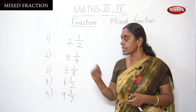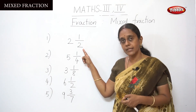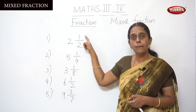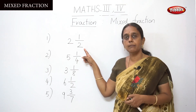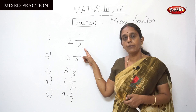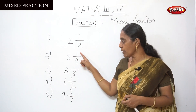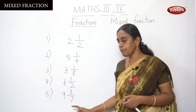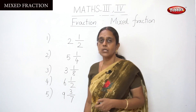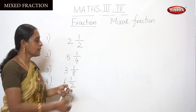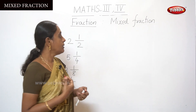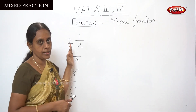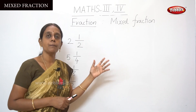In a proper fraction, the numerator is smaller than the denominator. Remember, the top number of a fraction is called the numerator and the lower number is called the denominator. So 5 and 1 by 4, 3 and 1 by 8, 6 and 1 by 2, and 9 and 3 by 7 are all called mixed fractions. Now from these examples, we are going to learn how to change a mixed fraction into an improper fraction.